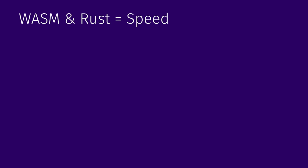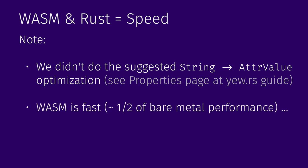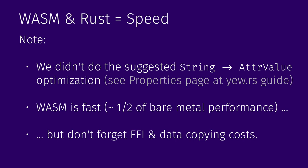I didn't even do all the suggested performance optimizations — for example, the official documentation suggests using an attribute value type instead of string to avoid some cloning. But I didn't feel I needed to because everything was already very fast. WebAssembly is about half the speed of bare metal performance you can achieve, but you still need to be aware of data copying costs. WebAssembly has its own memory space separate from the JavaScript application, so copying data back and forth can be expensive.